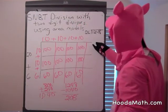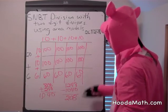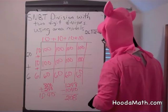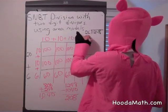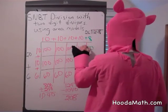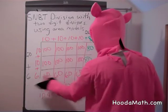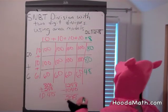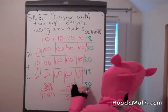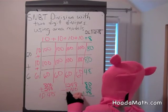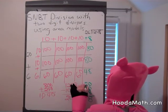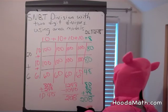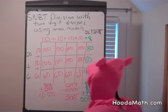Well, if I did another 10 that would be 260, but we only want 208, so we're going to do a smaller number. Let's try 8. 8 times 10 is 80, 8 times 10 is 80, 8 times 6 is 48. If we add these numbers — 80 plus 80 plus 48 — that gives us 208. So we're right on target.